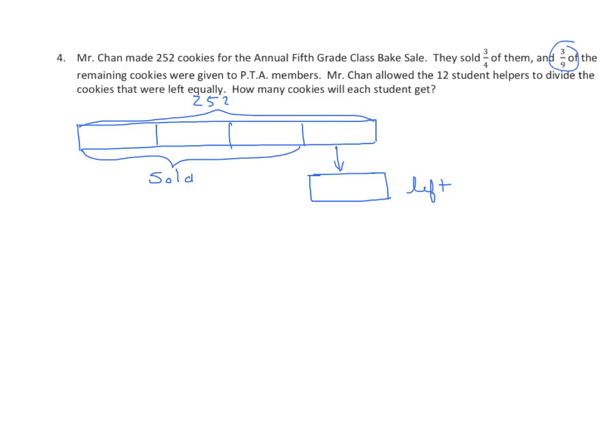Now, three-ninths of the remaining cookies were given to PTA members. Well, I know that three-ninths is one-third, so I'm going to make my life a little simpler here. We'll say that this went to the PTA, and what's left of that is the amount of cookies that are split by the 12 students. I'll put a 1, a 2, and a 12. And we want to know how big each portion is. So what do we do? What's represented here?